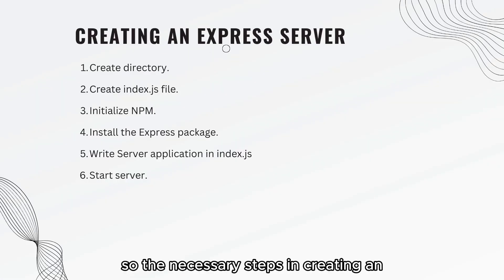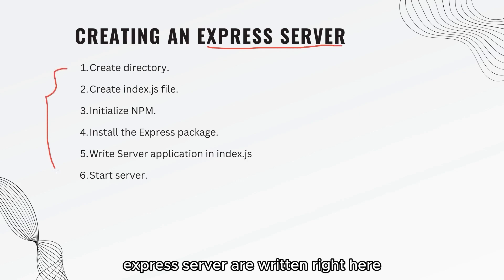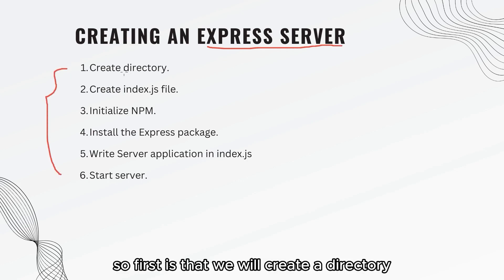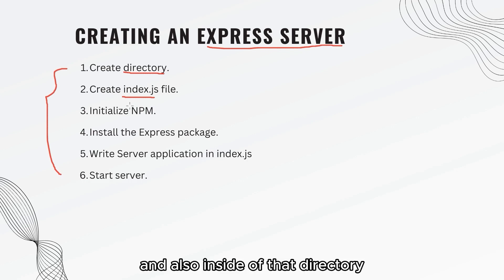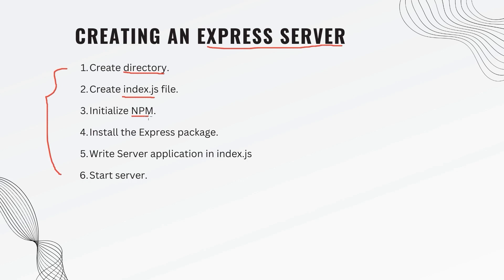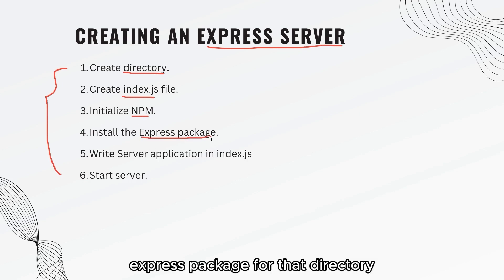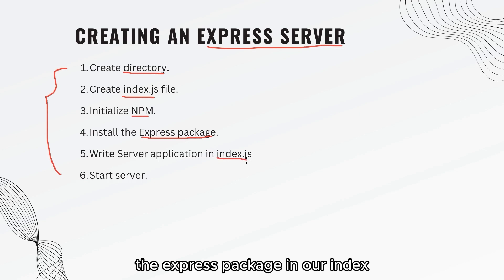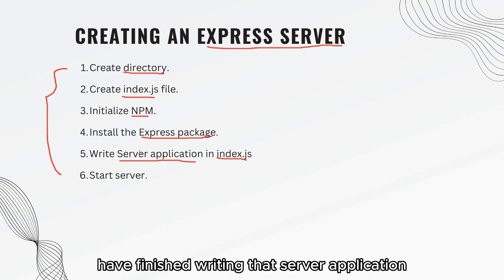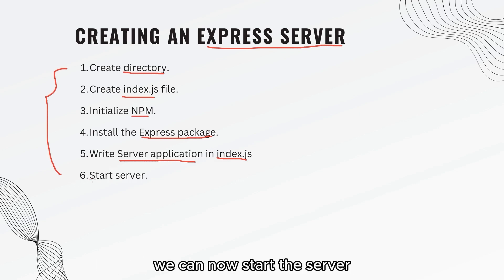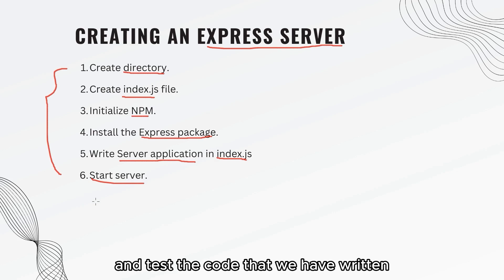The necessary steps in creating an Express server are: first, create a directory on your computer, and inside that directory create an index.js file. Also inside that directory, initialize npm — the Node Package Manager — in order to install the Express package. This allows us to use the Express package in our index.js to write a server application. Once we have finished writing the server application, we can start the server and test the code we have written.